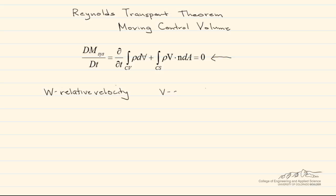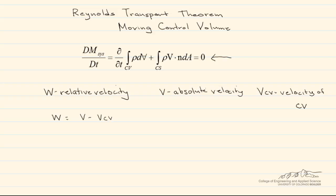Let v be what's known as the absolute velocity — that's the velocity of the fluid seen by a stationary observer in the fixed coordinate system. And we're going to let v sub cv be the velocity of the control volume, in other words, the velocity at which the control volume is moving. Therefore, our relative velocity w is going to be equal to our absolute velocity minus the velocity of the control volume, and that w replaces the v in our integral.